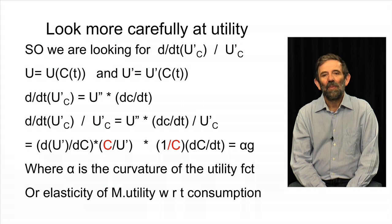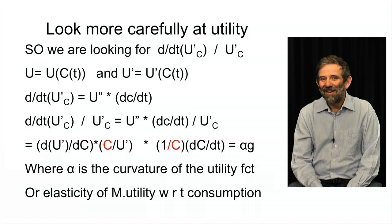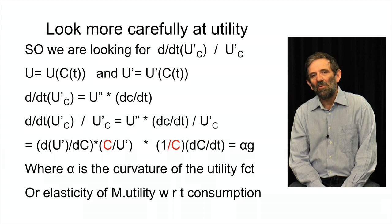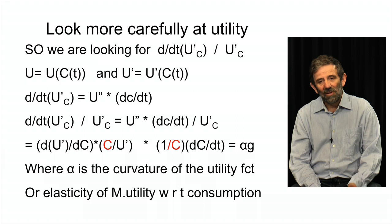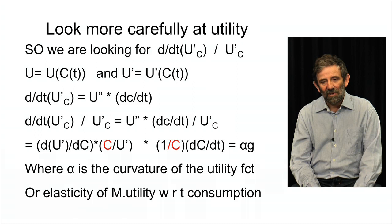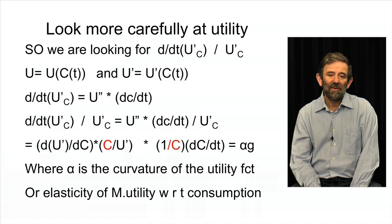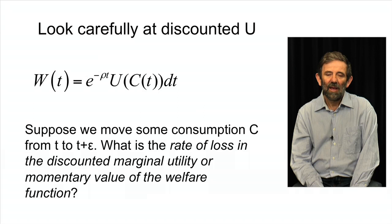Because if people are going to get richer at a rate g, and if rich people really care less and less very quickly about money, then, of course, the future people who would be richer, it really won't matter very much to them if we leave them costs. So then we can discount those costs. But if, on the other hand, you believe that α is quite small, the utility curve is quite flat, then the discount rate will be lower.